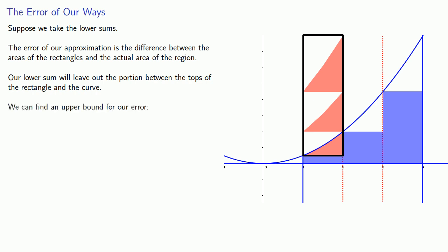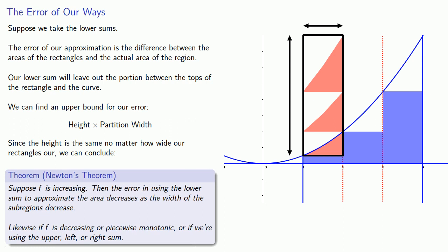It's the height of the rectangle times the partition width. The height of the rectangle is based on where the lowest and highest points of the curve are located, and is the same no matter how wide our rectangles are. So we can conclude the following, which is sometimes referred to as Newton's theorem. Suppose f is increasing. Then the error in using the lower sum to approximate the area decreases as the width of the subregions decrease. This also applies if f is decreasing or piecewise monotonic, or if we're using the upper, left, or right sum.